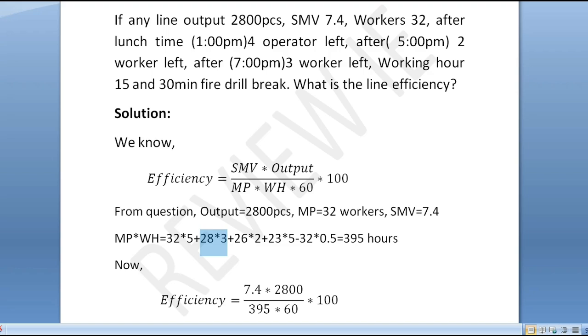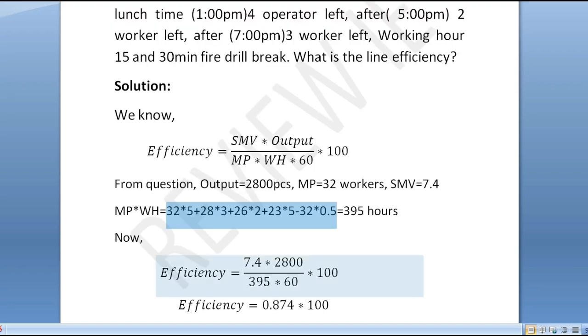Working hours 15 hours with 30 minute fire drill break. So 32 times 0.5 for those who left. The calculation: 32 plus 32 times (5 + 2 times 3 + 2 times 3 + 3 times 0.5) gives 395 hours. Output divided by total working minutes times 100 gives efficiency.